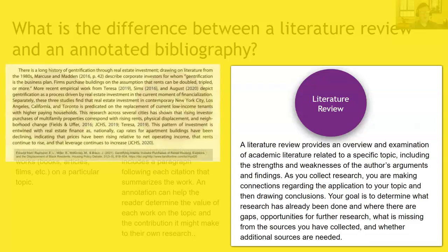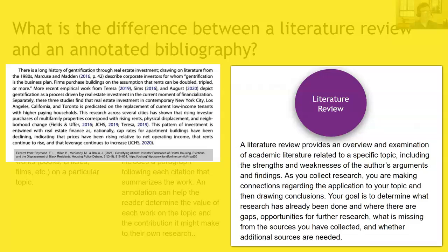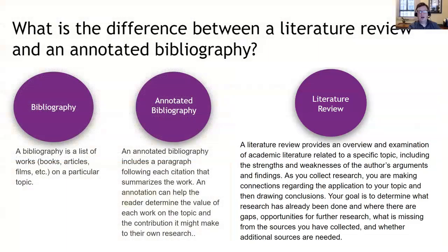A literature review, on the other hand, provides an overview and examination of academic literature related to a specific topic. You're going to include the strengths and weaknesses of the authors' arguments and findings. You may agree with certain things, disagree, or find that an author failed to mention a certain point or overlooked something. You're reading critically, looking at how you can apply it to your own research. You may find three different researchers approaching the same topic in different ways, and you're trying to find something you can expand on and apply to your own work — making connections and drawing conclusions.